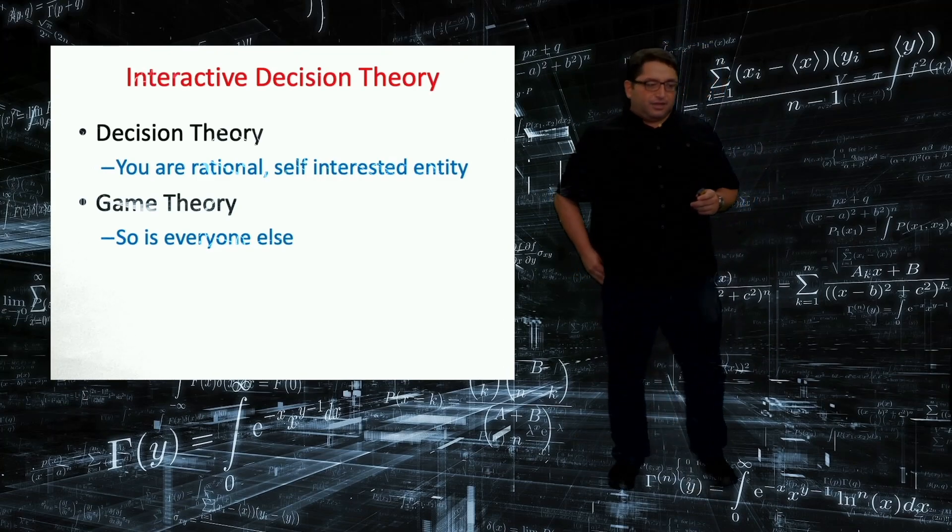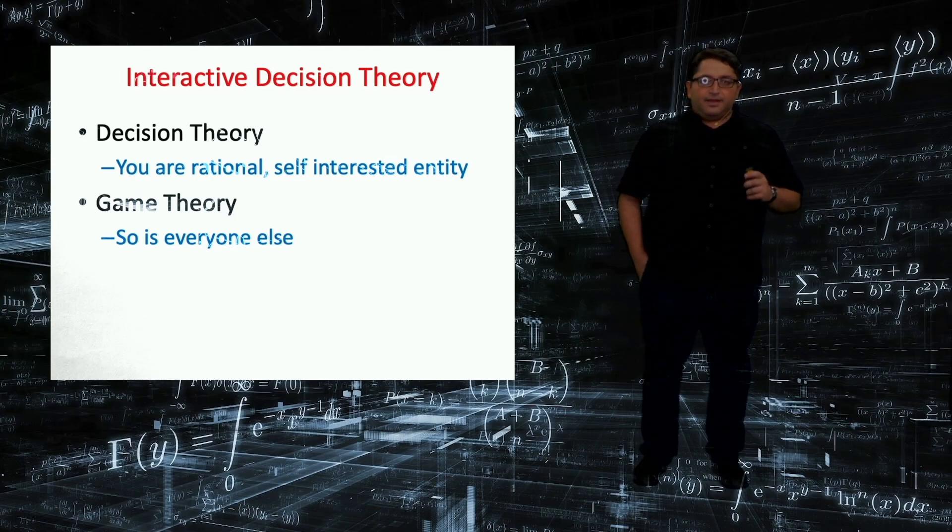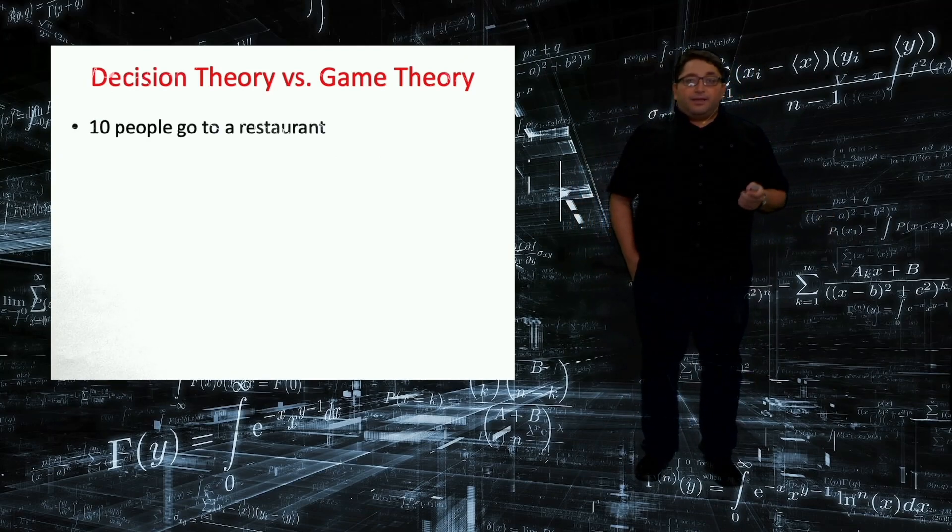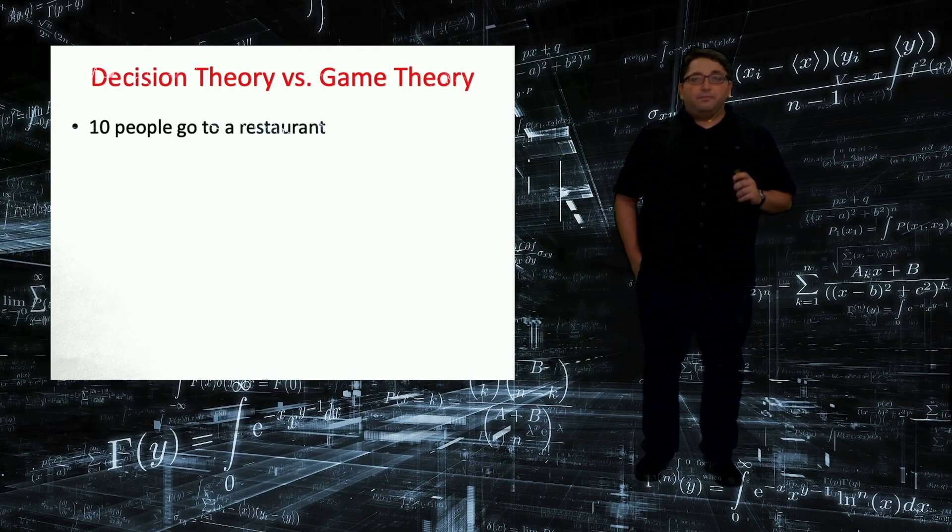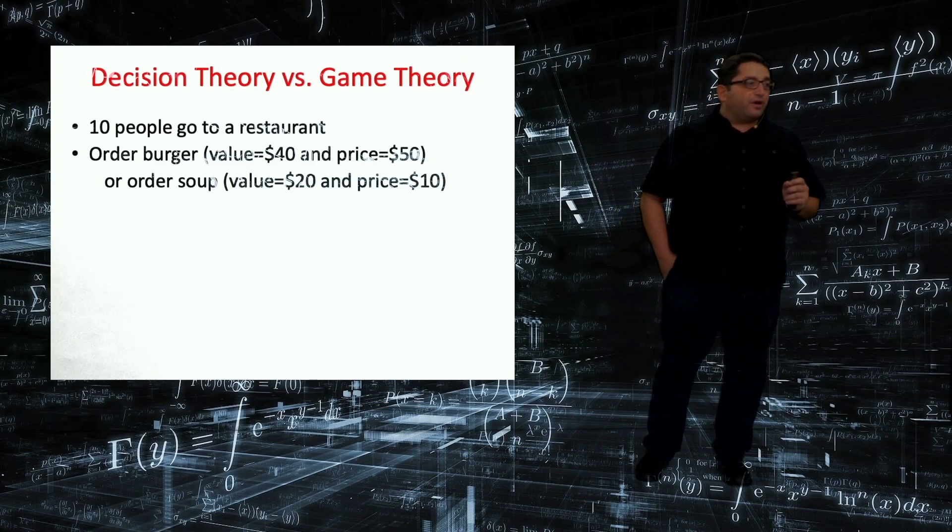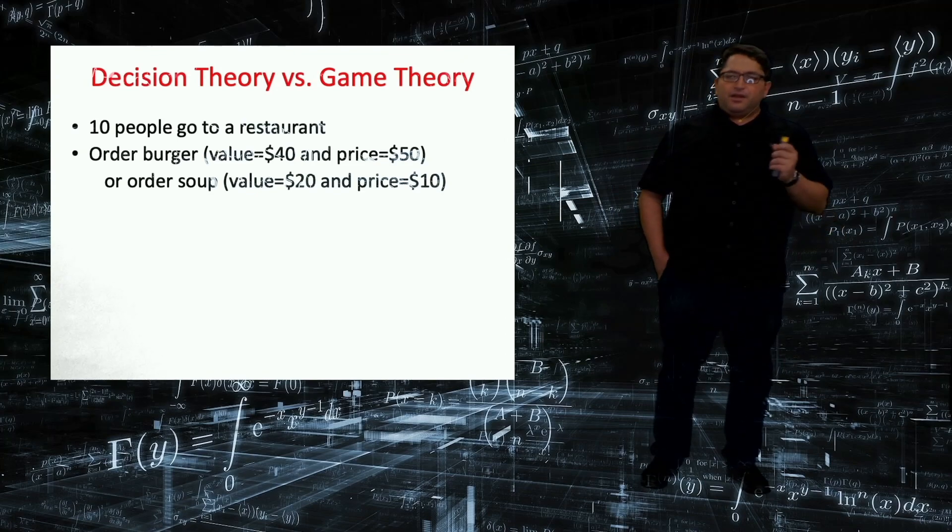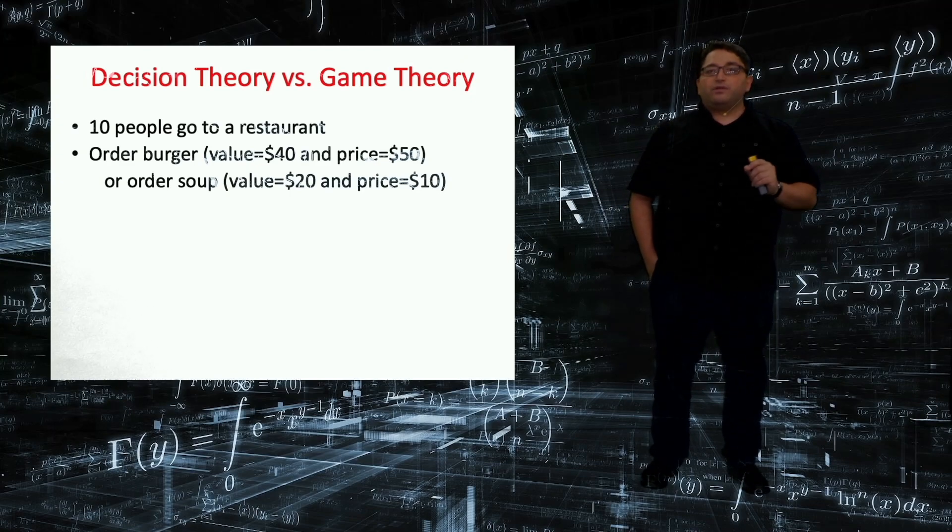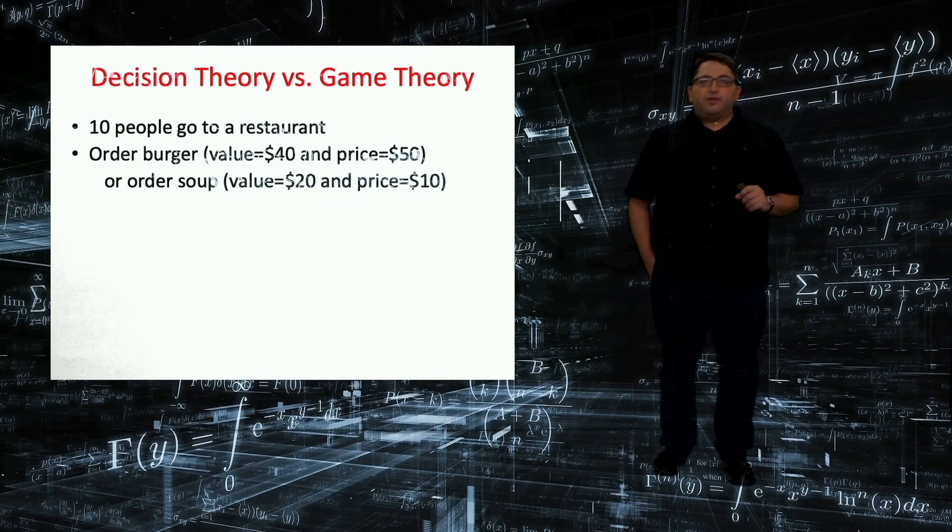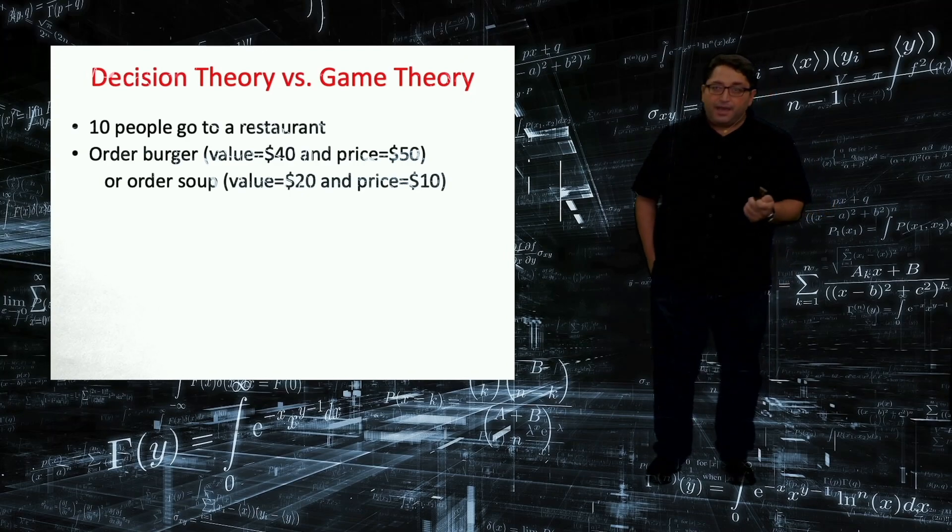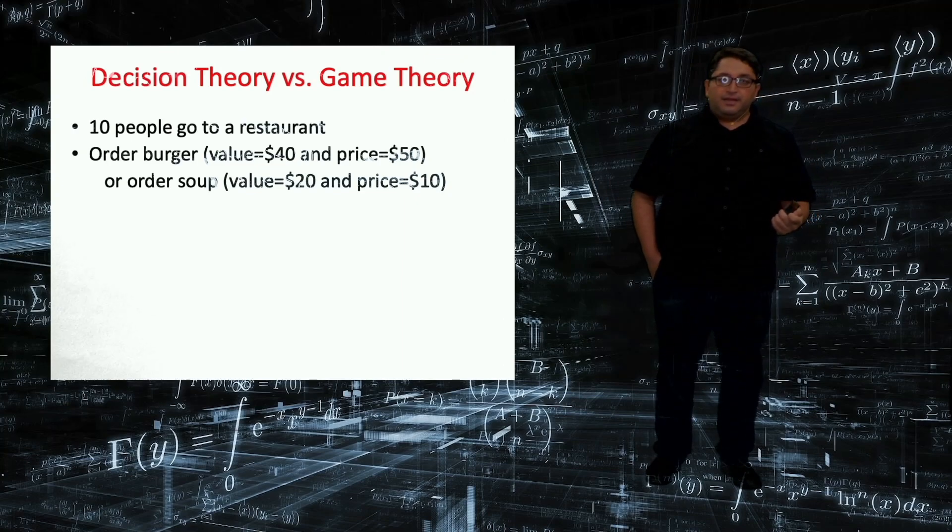In order to understand the comparison between decision theory and Game Theory, let us go over one simple example where 10 people go to a restaurant. This is a very simple restaurant with two items on the menu. The first one is burger and the second one is soup. Each individual has identical preferences where they value burger at $40—meaning I can pay at most maximum $40 for one burger. However, the price on the menu is $50. The second item soup, the value, the maximum price that I can pay for soup is $20, and its price is only $10.